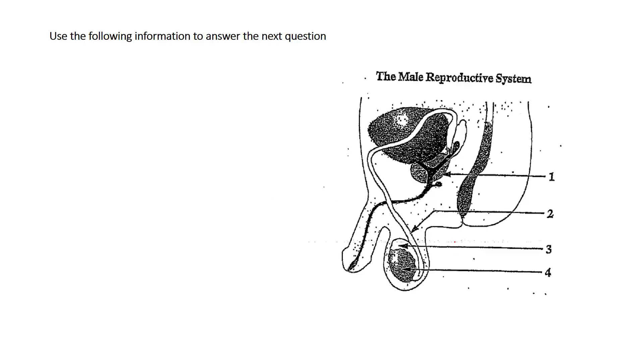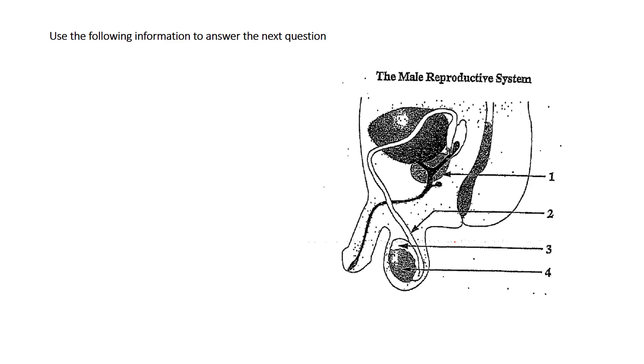So just to exemplify that, let's take a look at a practice question. Here we see a diagram. This one says use the information to answer just the next question. Always pay attention to that because sometimes it will be referring to the next two or three questions. This one however is just the next one here.